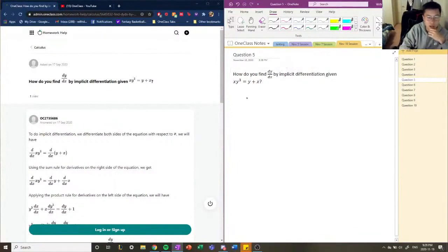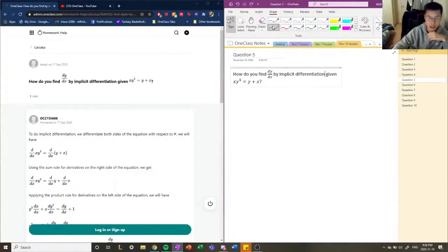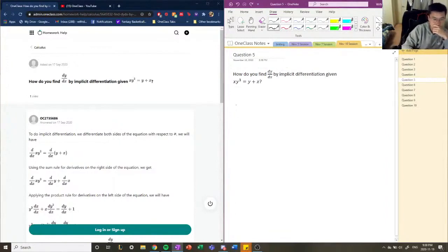So you take everything, all the terms, and differentiate in terms of dx, and I'll show you guys how to do that. Let's write down, let me change my thickness again. So let's say d/dx of x times y cubed equals d/dx of y plus x.